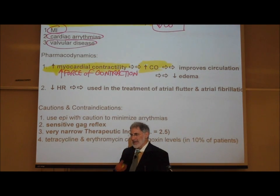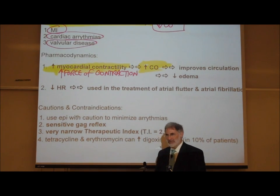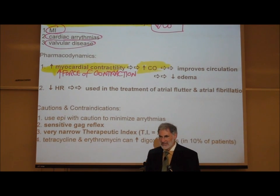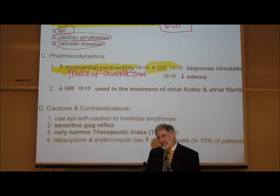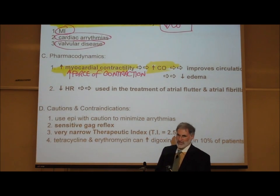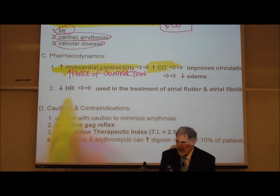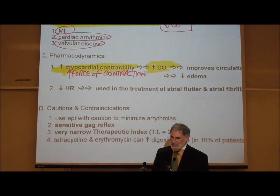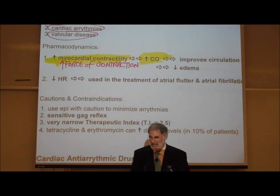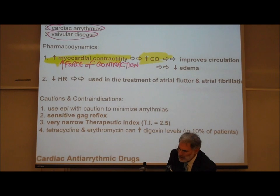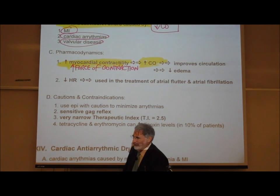That improves cardiac output. And by improving cardiac output, that improves circulation of blood through the body and reduces edema. Interestingly, digitalis not only increases force of contraction, but it also has the effect of slowing down heart rate. And because it slows down heart rate, digitalis and digoxin can also be used to control atrial flutters and atrial fibrillations.